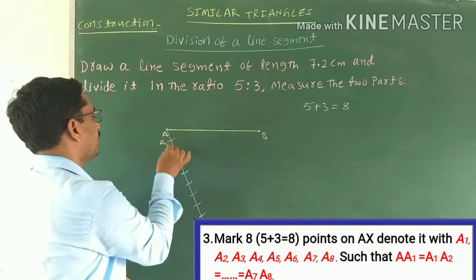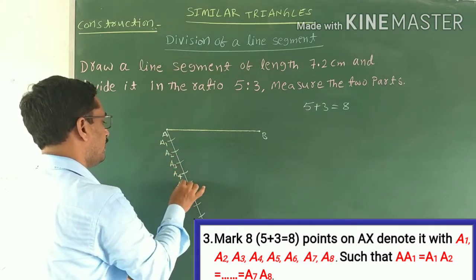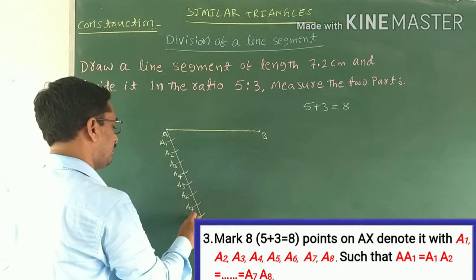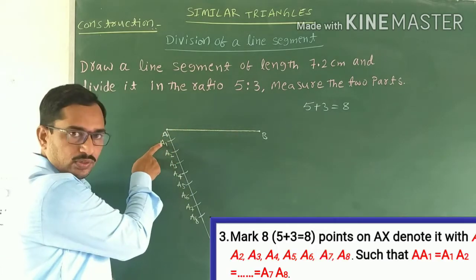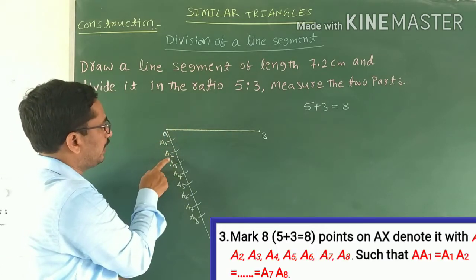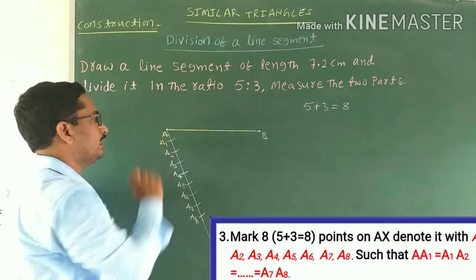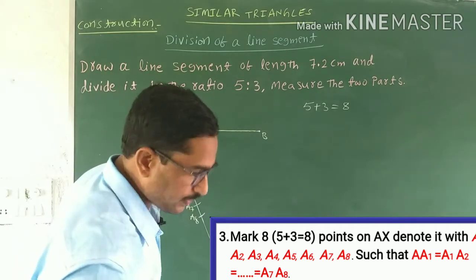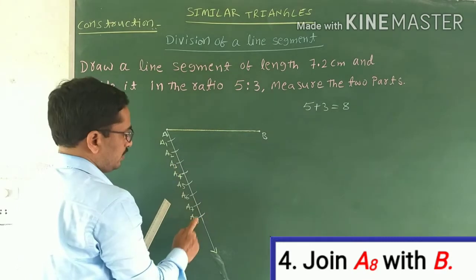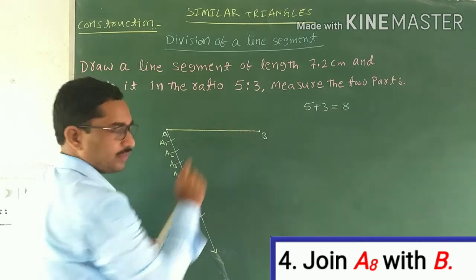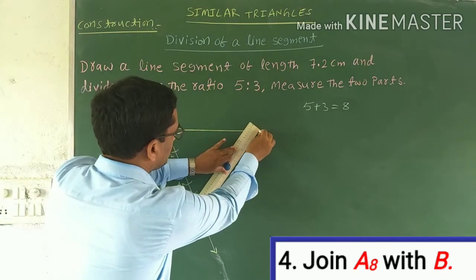Denote the arcs with letters: A1, A2, A3, A4, A5, A6, A7, and the last one is A8. All these arcs are equal in length — A1 to A2, A2 to A3, and so on up to A7 to A8. Now join point A8 with B using a scale.